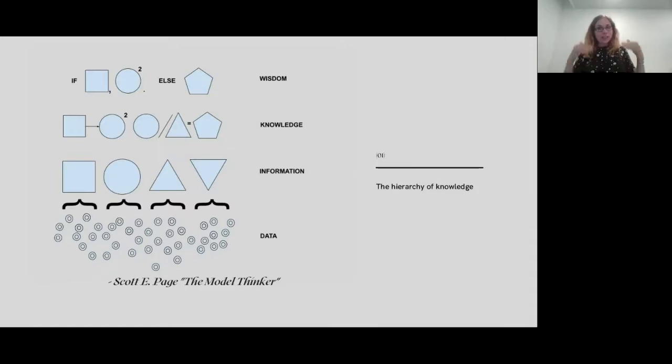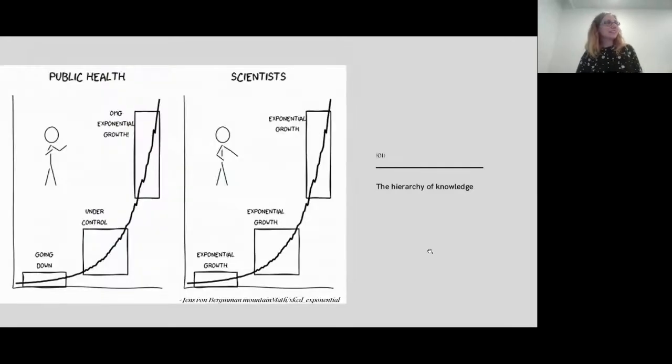But this is still a step below what we call knowledge. Knowledge is when you apply a model to your information, where you start to see relationships between the information and the data that led to that information. This is where you start to get hints of what kind of processes might be behind the information that you acquired. After that, there's still one more level. It's a bit of a big word to call it wisdom, but this is where we start to understand the system so well that we know certain relationships hold no matter what.